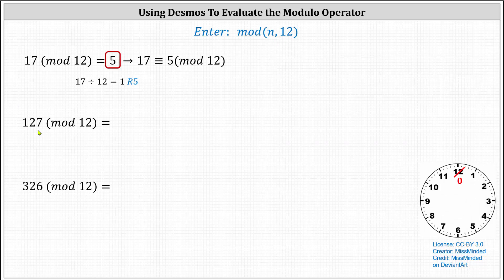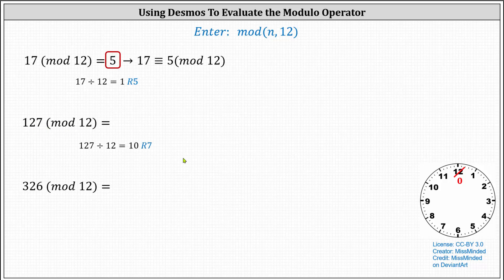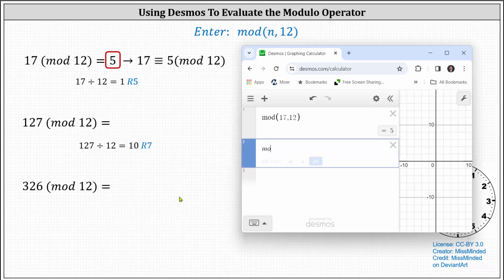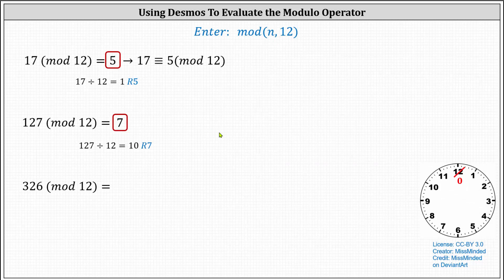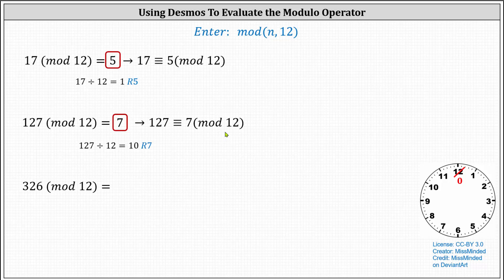Next, we have 127 mod 12, which is equal to the remainder when 127 is divided by 12, which is equal to seven. But again, let's go ahead and check this using Desmos. We enter mod and then in parentheses, 127 comma 12. And we can also state that 127 is congruent to seven mod 12.